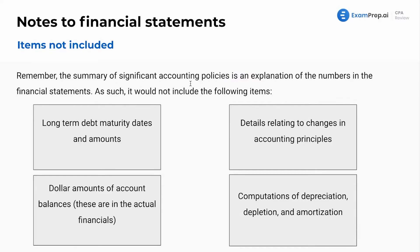The summary of significant accounting policies is an explanation of the numbers in the financial statements. As such, it would not include the following items. Long-term debt maturity dates and amounts — this is not a description; it would be in a debt summary schedule, in the actual financial statements rather than the notes. These are common examples they'll try to get you to choose as wrong answers for what is included in the summary. Also, details relating to changes in accounting principles are not going to be in the summary of significant accounting policies — that will be disclosed separately.